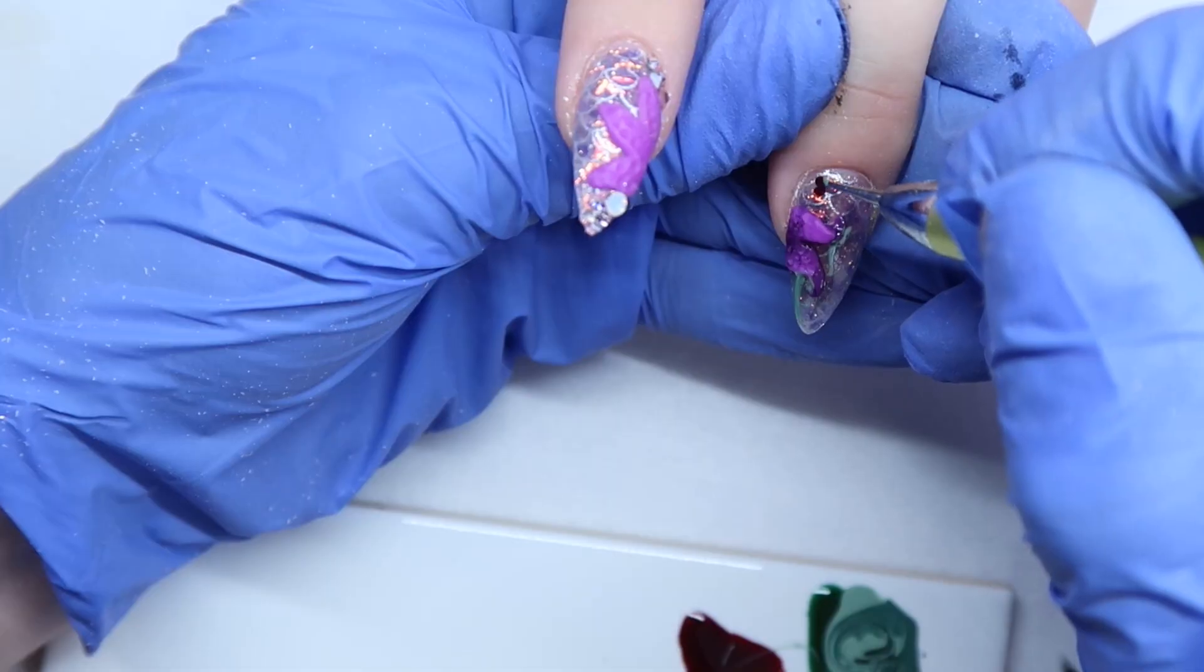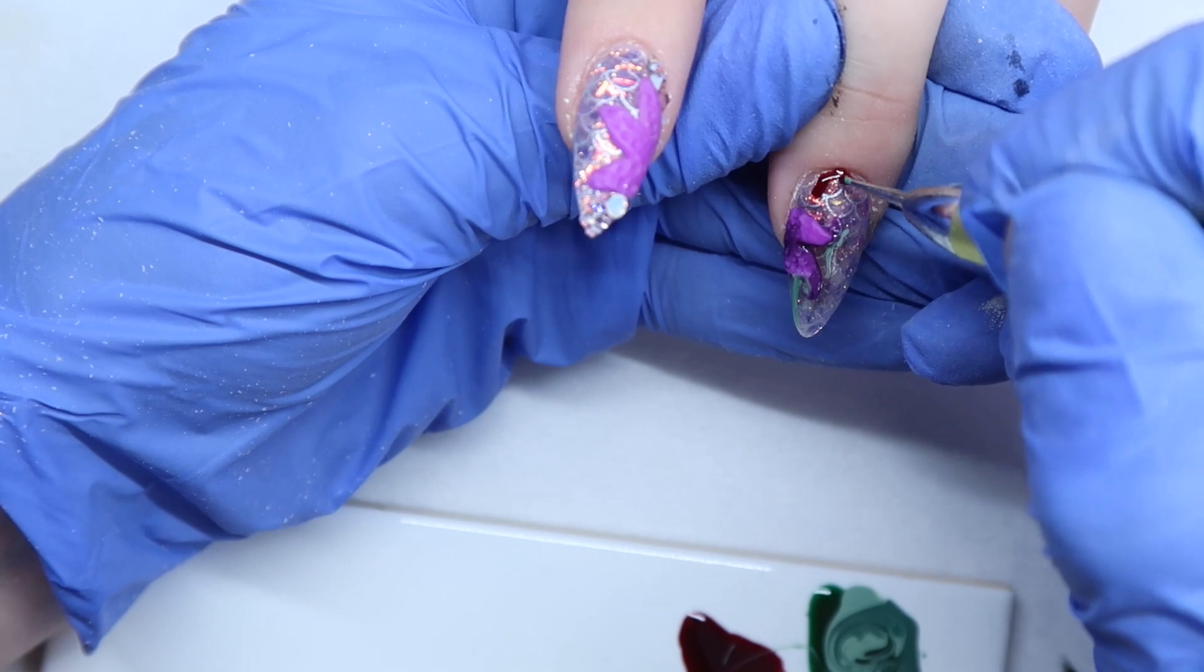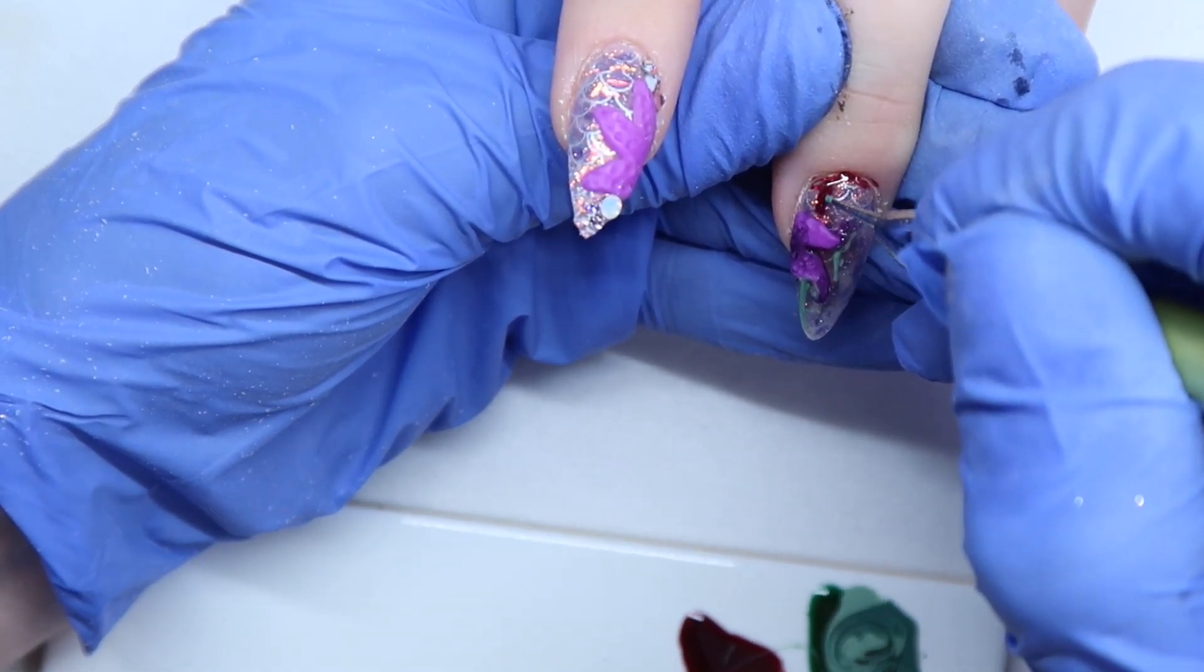So I added some bloody drips as well using this glass syrup gel from Uno it's called. But I actually have no idea where you can get this, so I will put in the description box some alternatives.